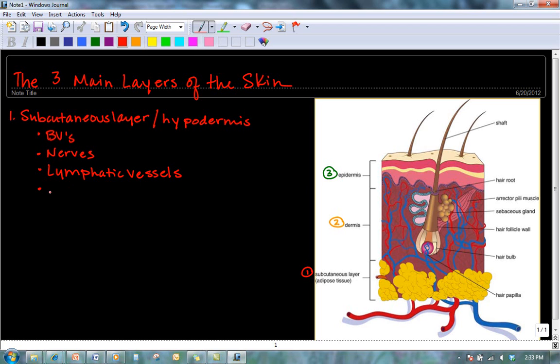But the biggest portion of the subcutaneous layer is the adipose tissue or fat. And what the adipose tissue is going to do is it's going to provide for padding or protection and also insulation.